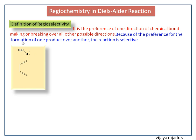This is a more reactive diene because of the presence of an electron donating group. Here the electron donating group is present on the first carbon atom. We can see the flow of electrons on the diene — it ends up on the fourth carbon atom. Now the fourth carbon atom of the diene acquires more electron density, represented by the partial negative charge.